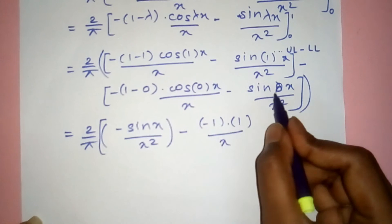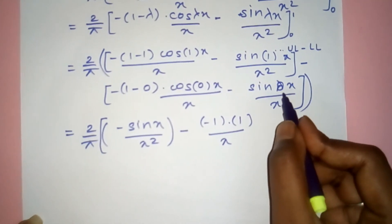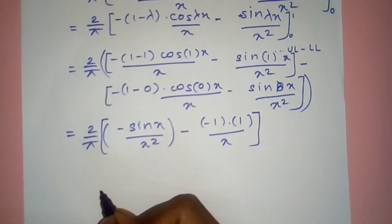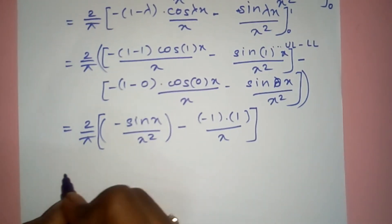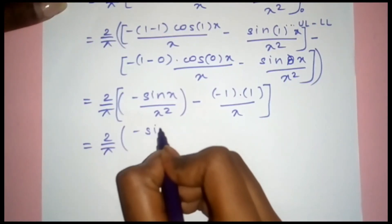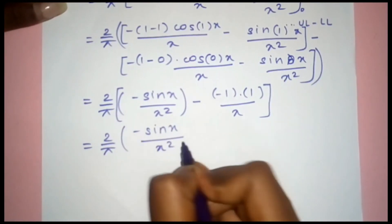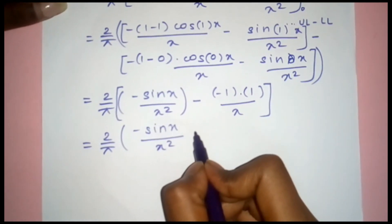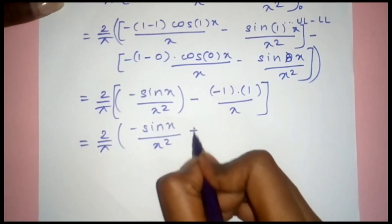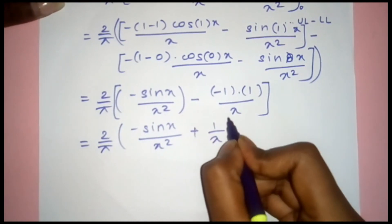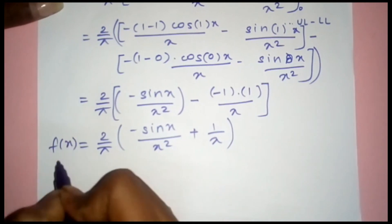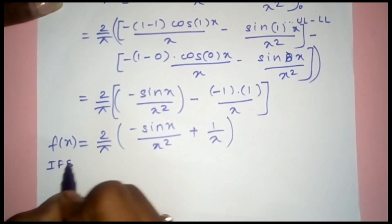Therefore F(x) = (2/π) [ −sin(x)/x² + 1/x ]. This is the inverse Fourier sine transform — the final answer.